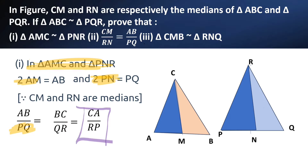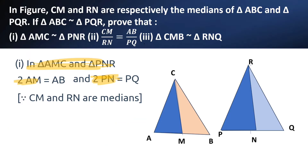Now let us substitute 2AM instead of AB and 2PN instead of PQ. So 2AM by 2PN is equal to CA by RP. Here, 2 and 2 get cancelled, giving AM by PN is equal to CA by RP.